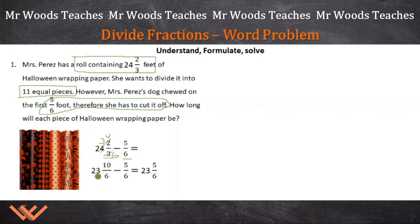There we go. So now I have 23 and 10/6 minus 5/6. So I can subtract 5/6 from 10/6, and that's going to give me 23 and 5/6. So that's our total feet of the paper that Mrs. Perez has.